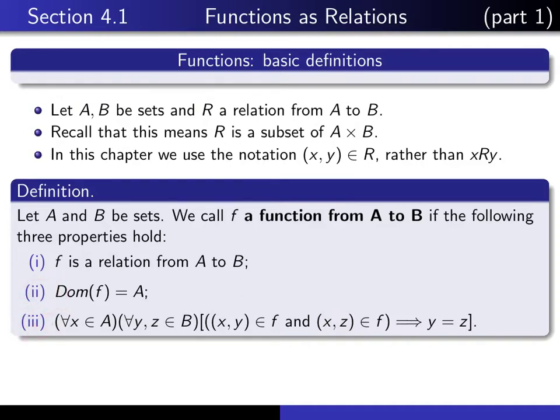So 2 and 3 are telling us what additional properties a subset of A cross B has to have in order that it actually represents a function. The first one is telling us that every single x in A has to lie in the domain. In other words, for every x in A, there has to exist at least one y in B such that (x, y) is an element of the relation. This one is telling us that if you look at the first component, there can only be exactly one second component. In other words, to each x in the domain, we can associate only one y such that (x, y) is an element of the relation.